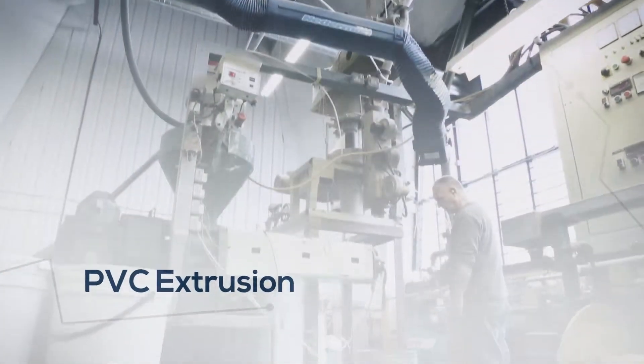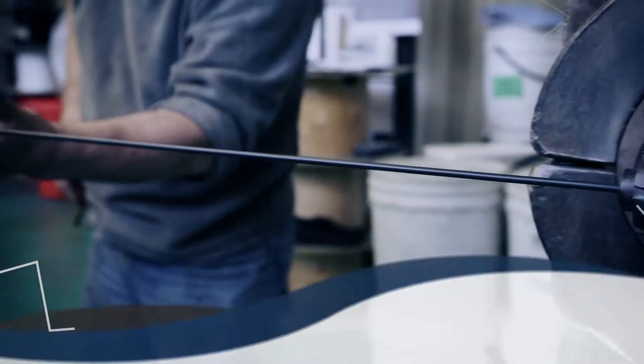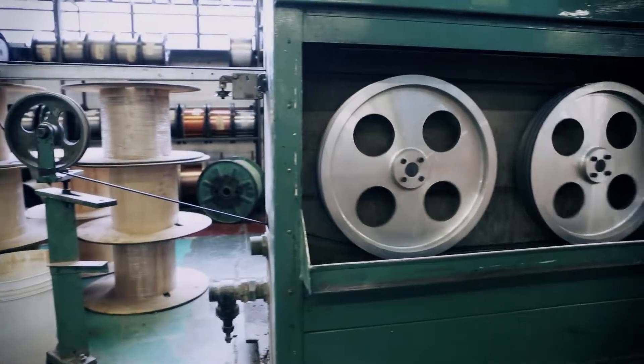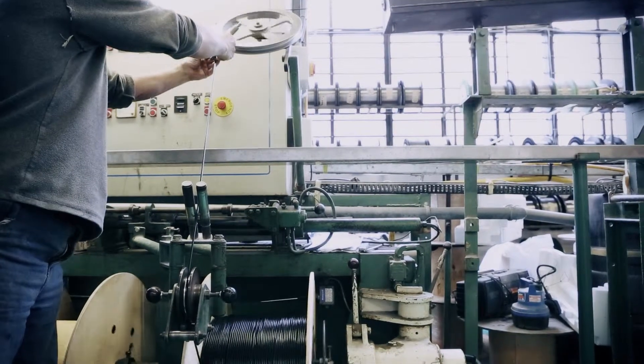And finally, high temperature PVC insulation is being applied, creating a tough outer layer capable of withstanding 105 degrees Celsius.